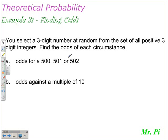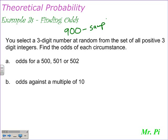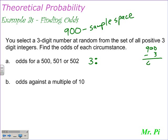Here's our last example, example 3S, under theoretical probability — actually finding odds. We select a three-digit number at random from the set of all positive three-digit integers. Remember, our sample space is 900. We want to find the odds of each circumstance. Finding the odds of a 500, a 501, or a 502: that would give us three favorable outcomes. Unfavorable outcomes are found by taking 900 and subtracting 3, which gives us 897. So the odds of randomly selecting a 500, 501, or 502 would be three to 897.